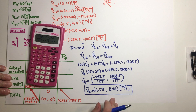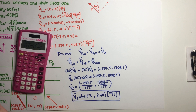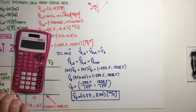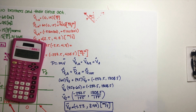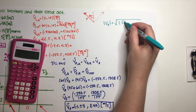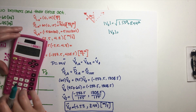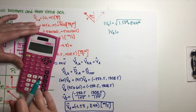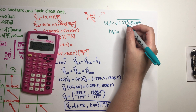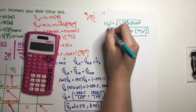The problem asks for magnitude and direction, so we need to convert from component form. To get the magnitude — the speed — we use the Pythagorean theorem: √(1.53² + 8.44²). Calculating: 1.53 squared plus 8.44 squared, then taking the square root, gives us 8.57 meters per second.